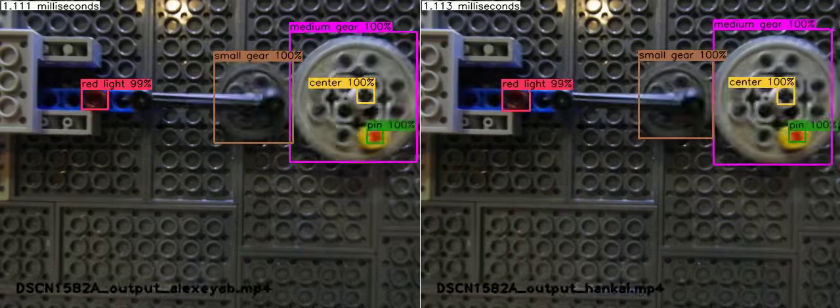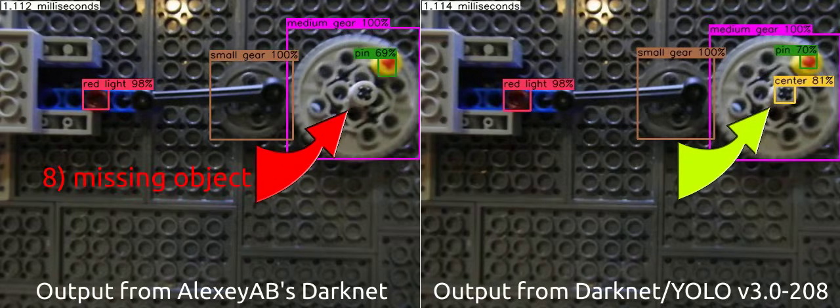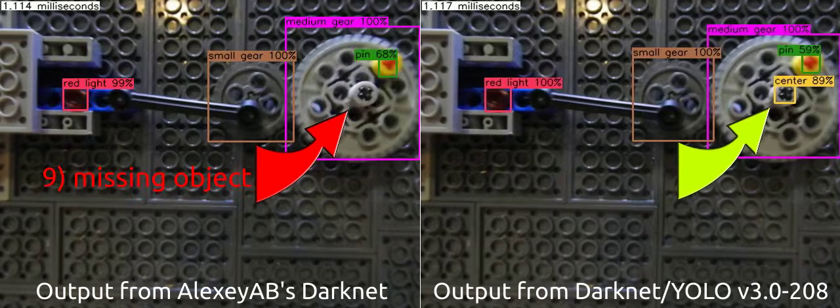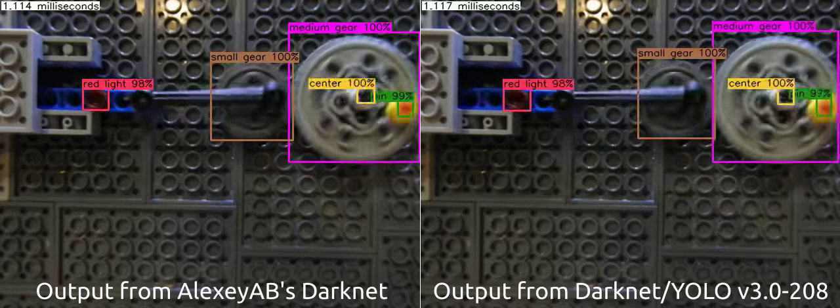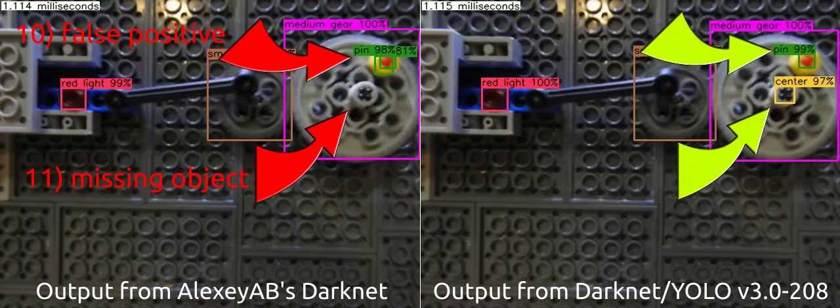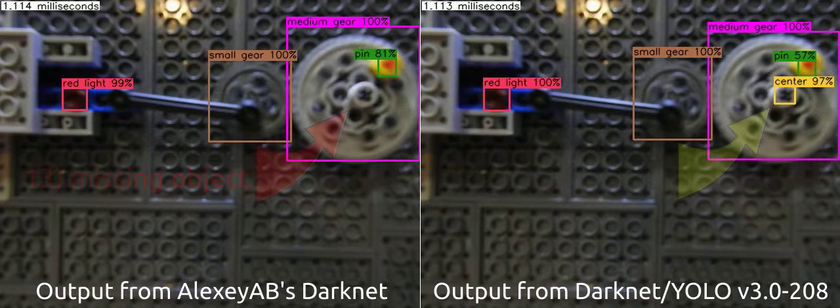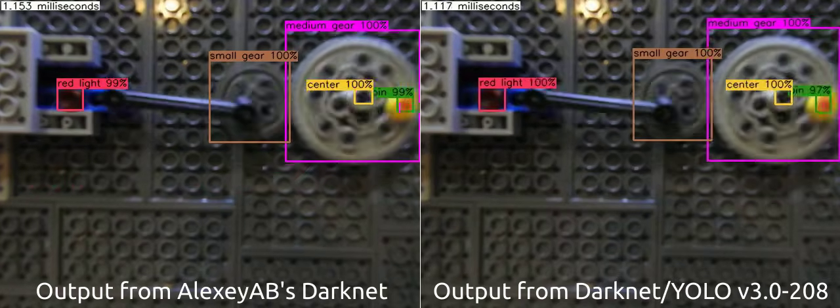The video you are seeing is the output from running those two neural networks to see what sort of impact the bug fixes have had. On the left, you can see the previous version of Darknet, commonly known as the Alexi AB fork. There is no version number returned by this fork, but it was cloned and built on December 27, 2024.